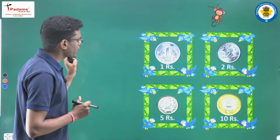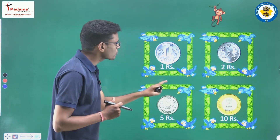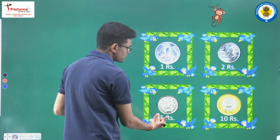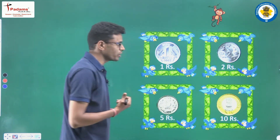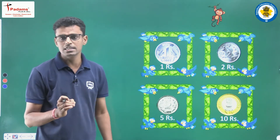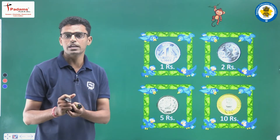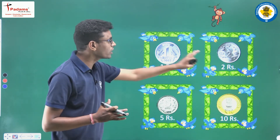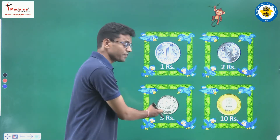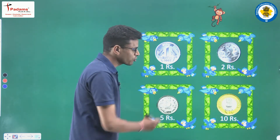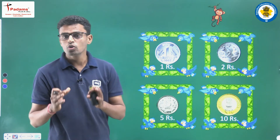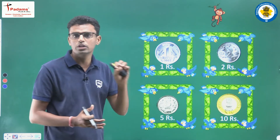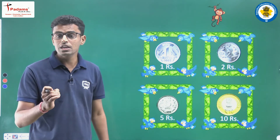So first, let us discuss Indian money. Here we can see coins — so many coins! There is the one rupee coin, two rupees coin, five rupees coin, and ten rupees coin. This means Indian currency — Indian rupees — includes coins such as the one rupee, two rupees, five rupees, and ten rupees coins.